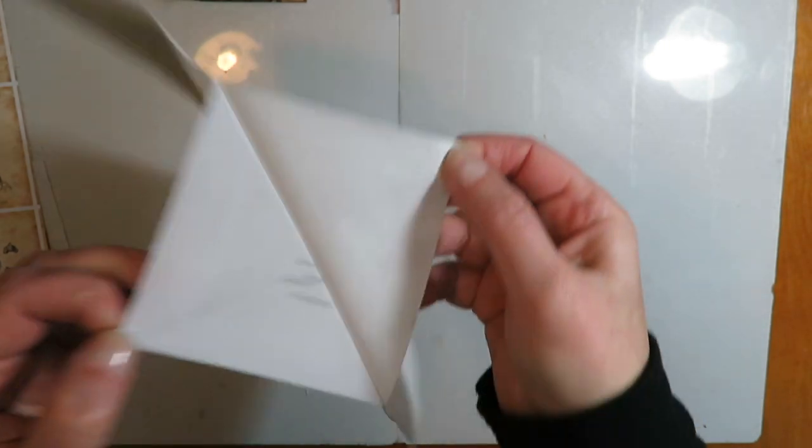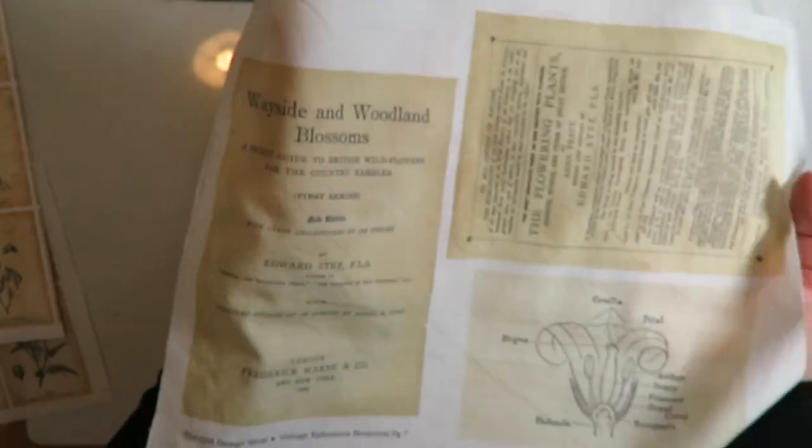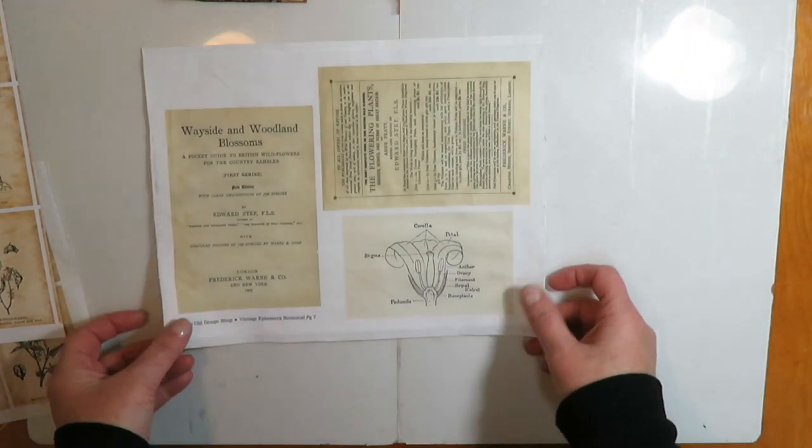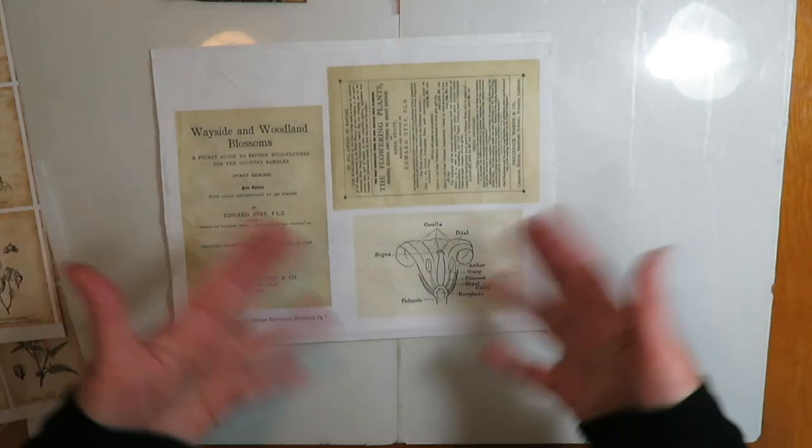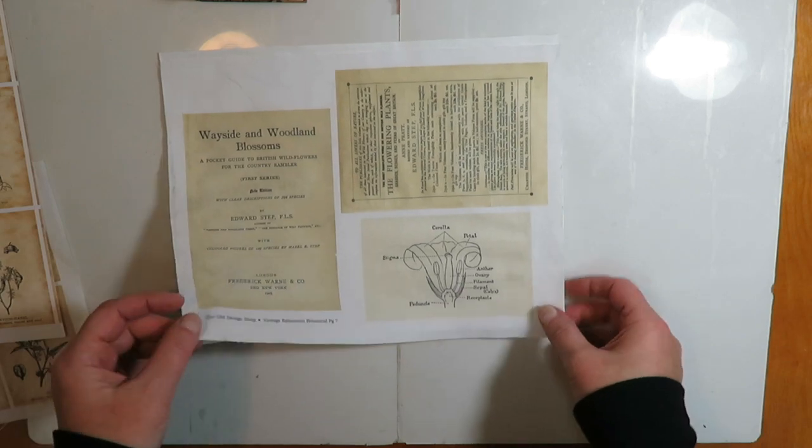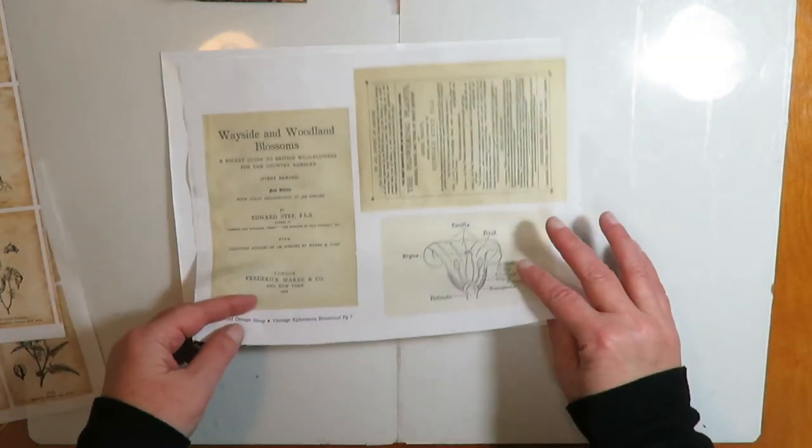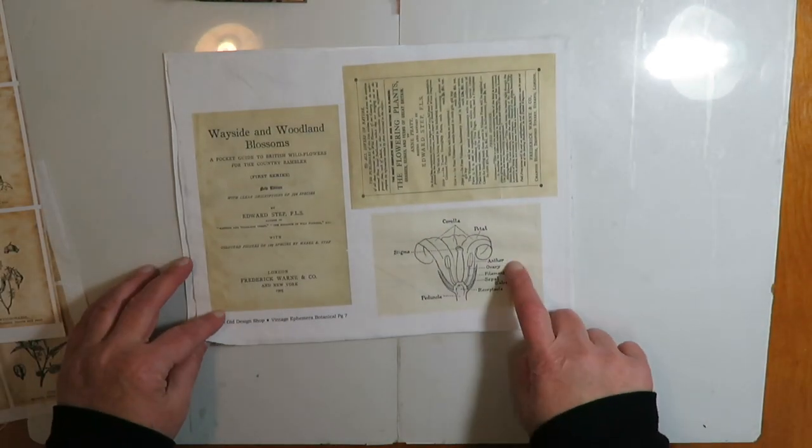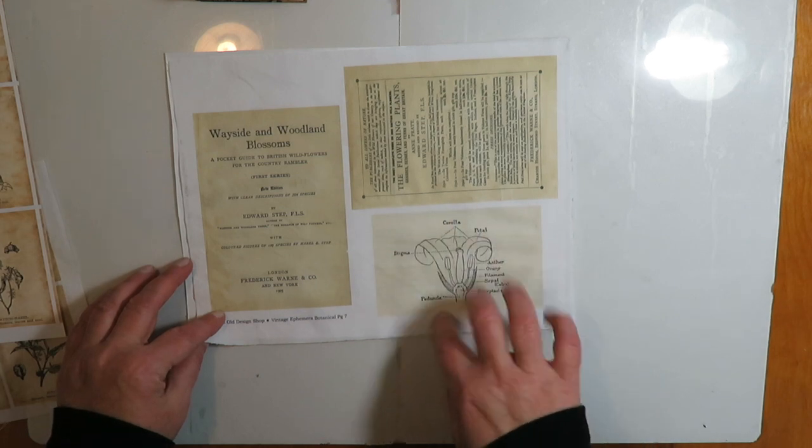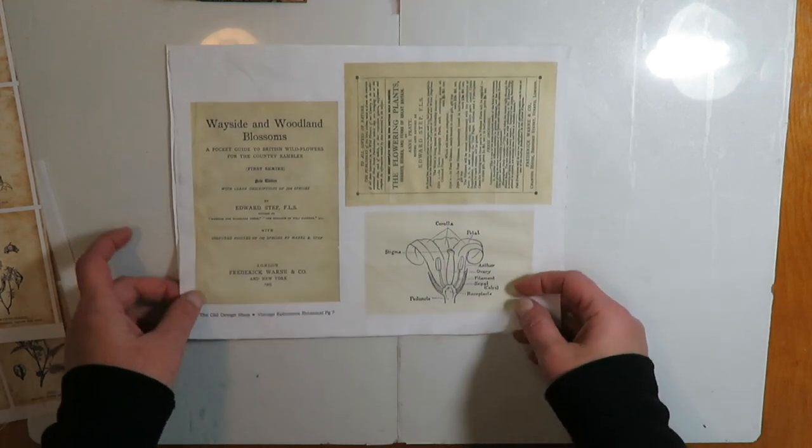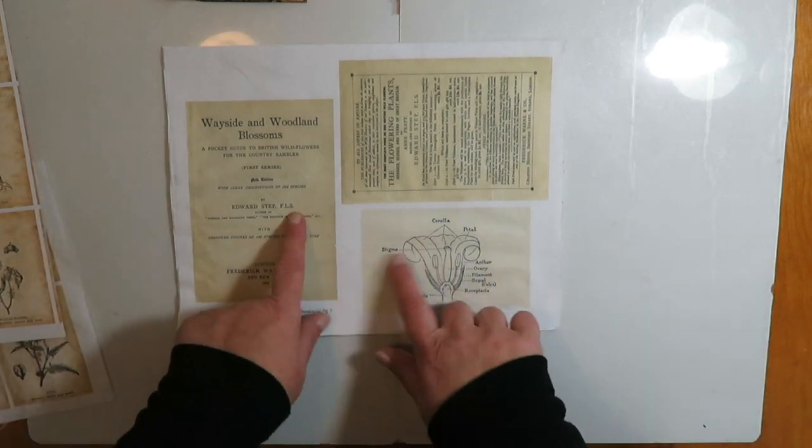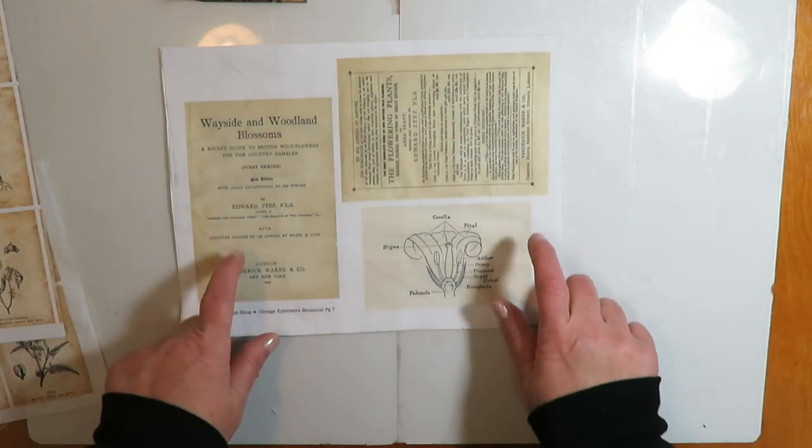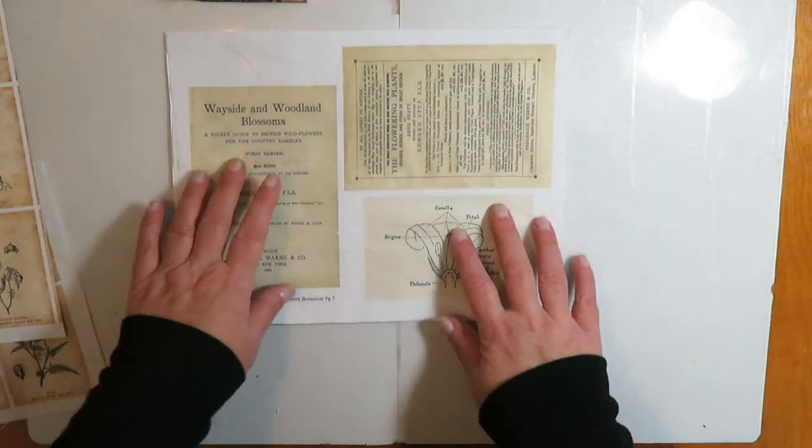And there you have it. Now these are not colorfast. There are setting treatments you can do to set the color. I'm not doing that because I don't intend to get these wet. If you were gluing them down, you would have to either set the color or turn them into a book cloth, which I can do another video of that if you'd like. Let me know down below.